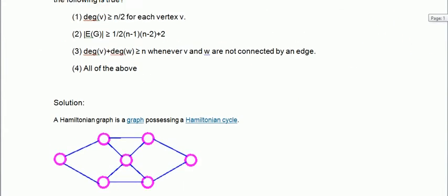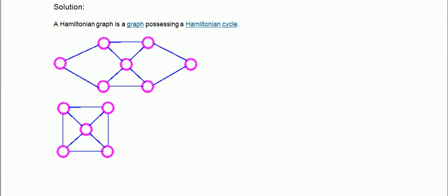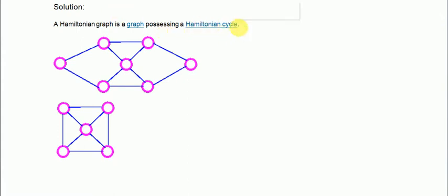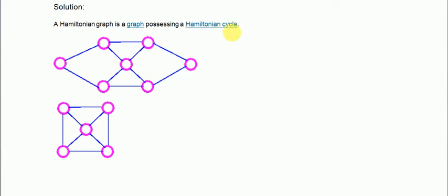First, let us see what is a Hamiltonian graph. A Hamiltonian graph is a graph possessing a Hamiltonian cycle. A Hamiltonian cycle is a path in which we should traverse each node exactly once — we have to cover each vertex exactly once.